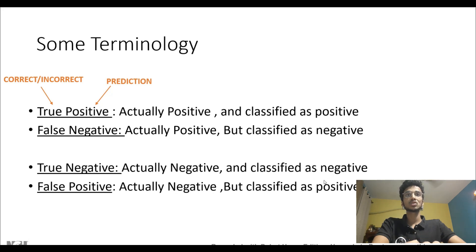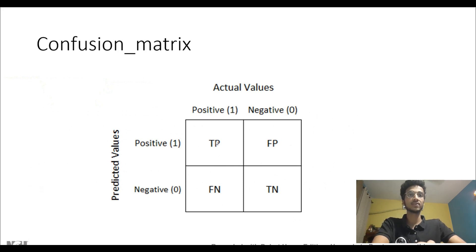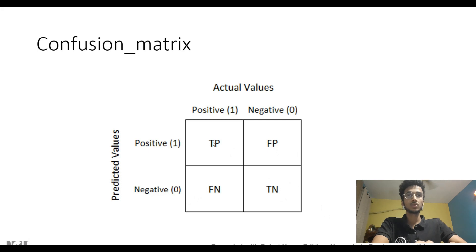Using these four terms we build something called the confusion matrix, which you might have seen in many places. It's a representation of your true positives and true negatives on the diagonal and false positives and false negatives on the opposite diagonal. True positive and true negative should always be maximum because those are the correct predictions.